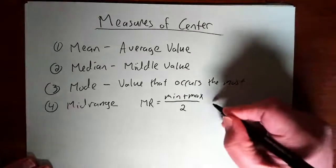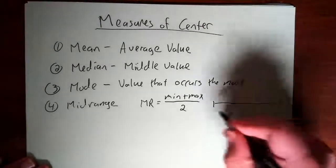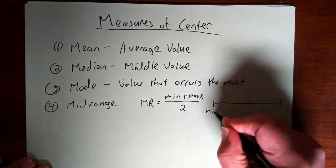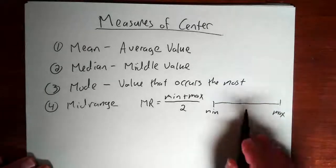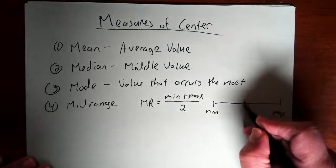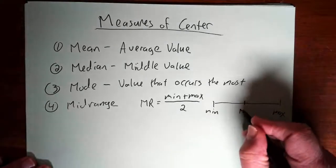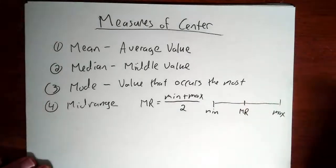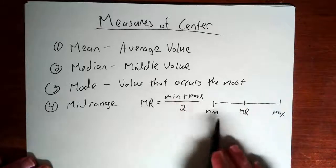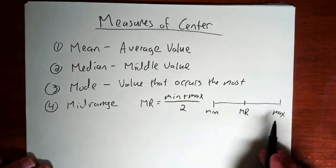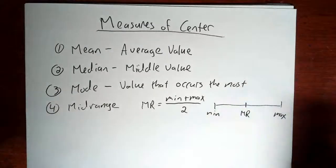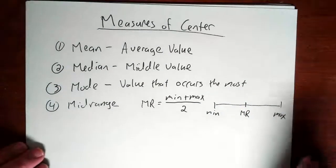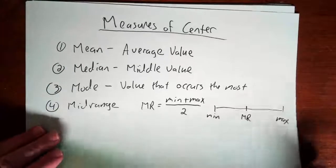The idea is: if the minimum value is at one end and the maximum is at the other end, the mid-range divides that range in half. So you're averaging the minimum and maximum values, and whenever you average two numbers you get the number halfway between them. So our four measures of center are the mean, median, mode, and mid-range. Let's take a look at each one of these.